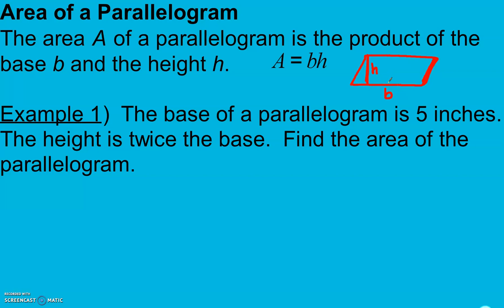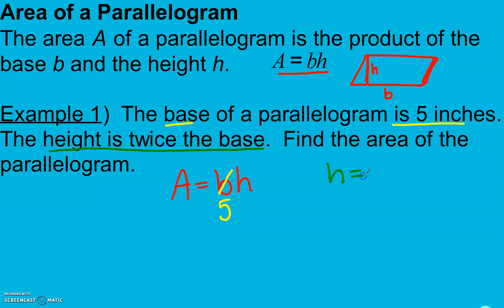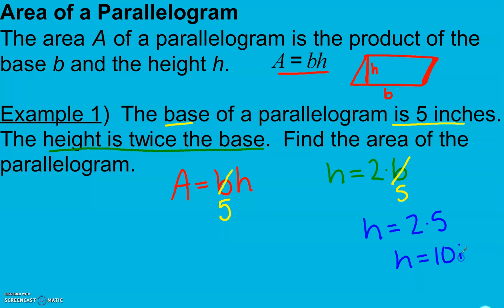The base of a parallelogram is 5 inches and the height is twice the base. Find the area of the parallelogram. Area equals base times height. Base is 5, so I plug in 5 for B. Height is twice the base, meaning H equals 2 times 5, which is 10 inches. Plugging that in for H, I multiply and get an area of 50. Since we're finding area, the label is inches squared.